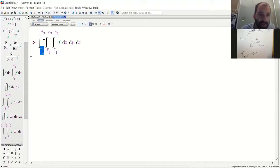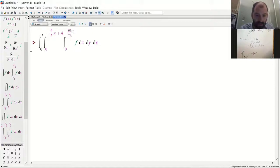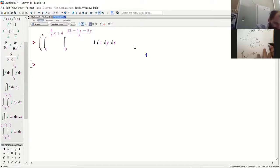x went from 0 to 3, y went from 0 to negative 4/3 x plus 4, and z went from 0 to 12 minus 4x minus 3y all over 6. The function we integrated was 1. Make sure you have dz dy dx - you may need to change those orders if necessary. Oh wow, look at this! Maybe we could have done it by hand if it came out that nice. The answer is just 4. So as an exercise, go through and do this by hand.